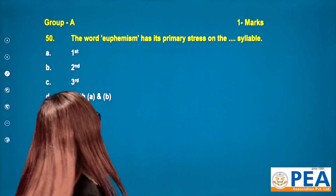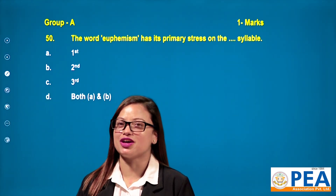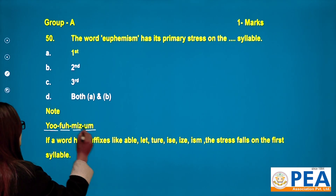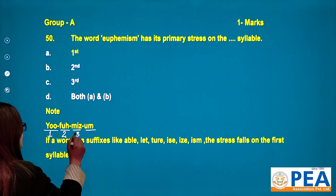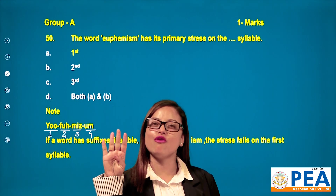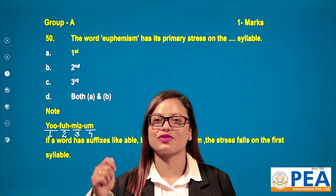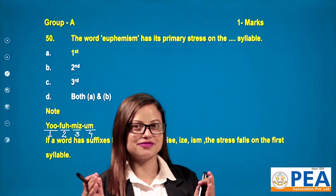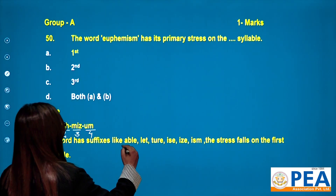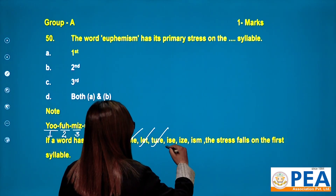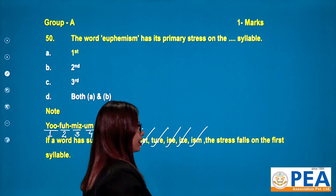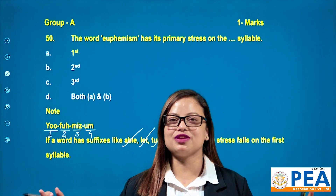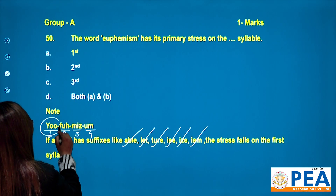Now this is question number 50. The word 'euphemism' has its primary stress on which syllable? Euphemism: eu-phe-mi-sm — this is one, two, three, four. It has altogether four syllables. We need to observe the primary stress. If a word has suffixes like -ure, -que, -re, -ia, -cia, -cial, -tion, the stress falls on the first syllable. According to this trick, the primary stress will be on the first syllable, that is 'eu'.